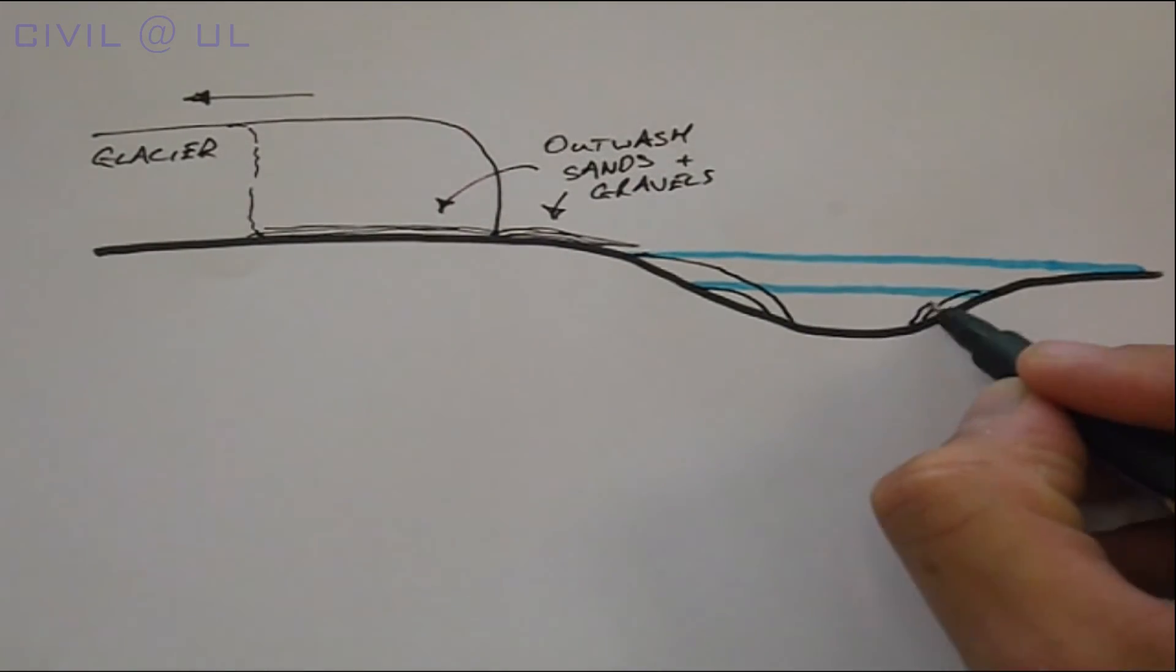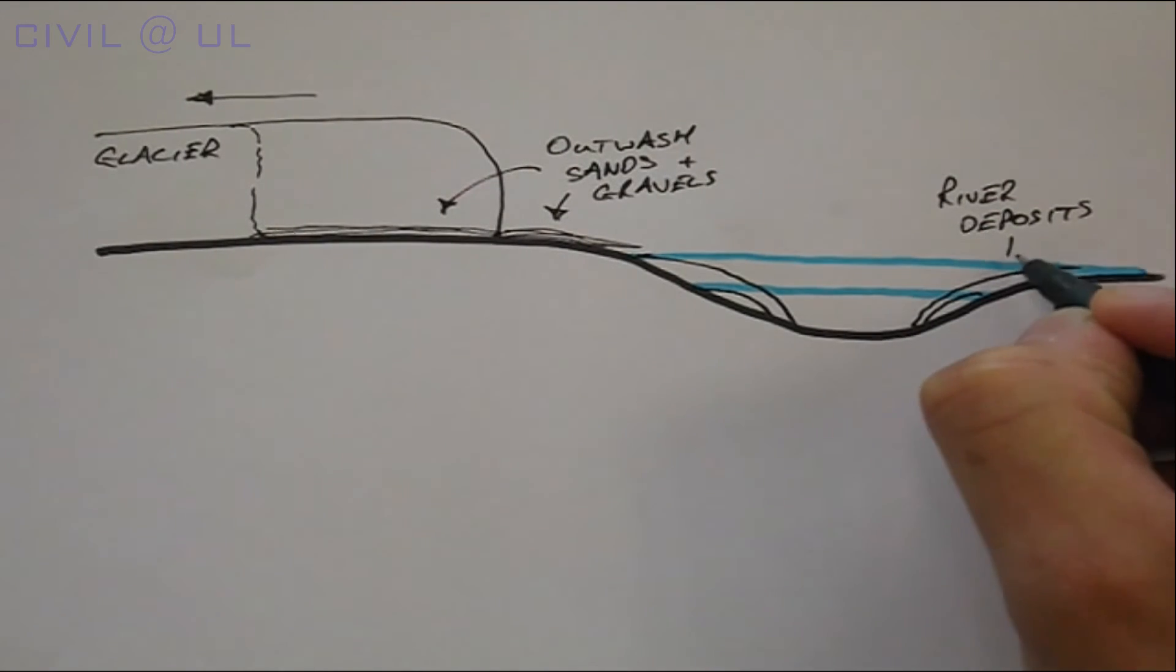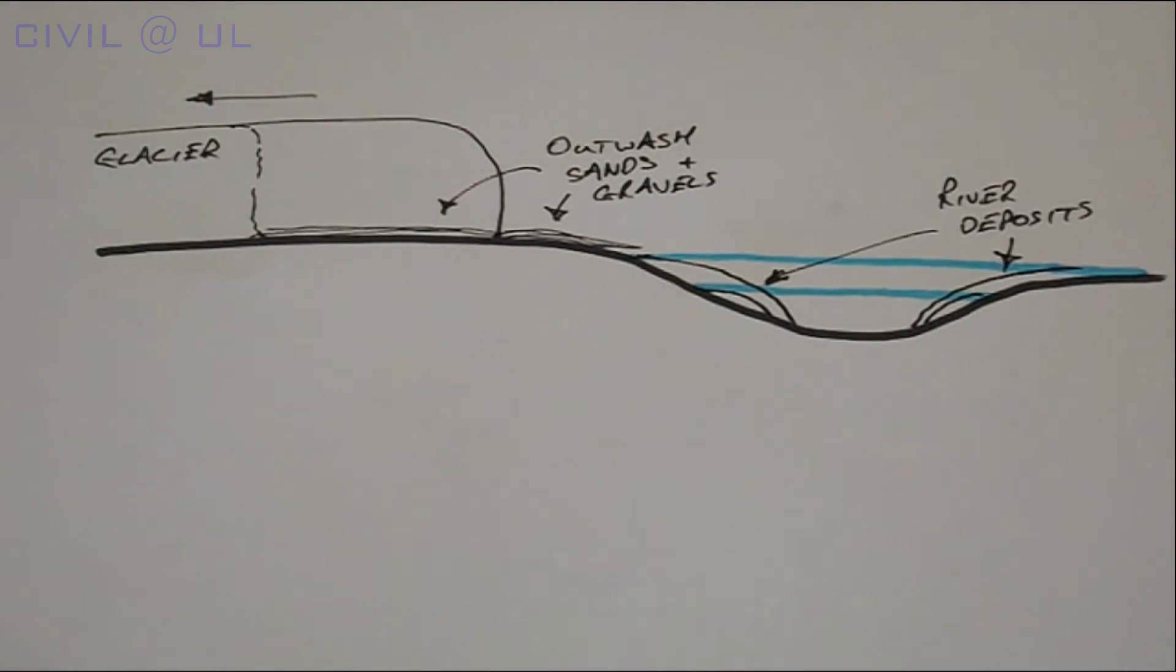They cut down through the soils and rocks carrying the material to be redeposited at some other location. So we can see that either outwash gravels from the glacier or river deposited material give us a new type of soil.